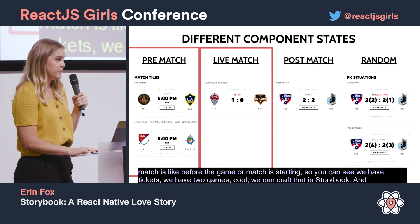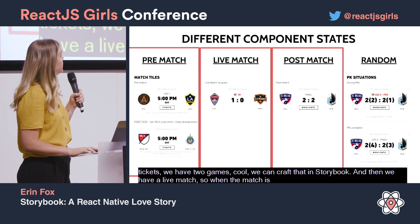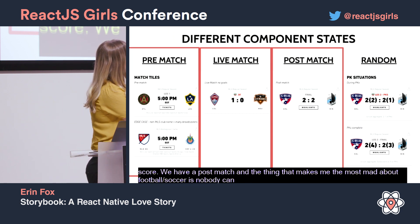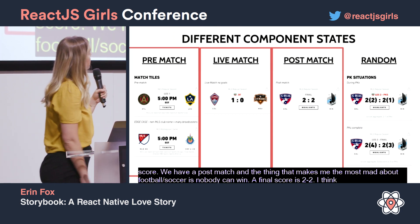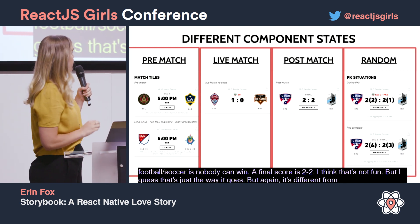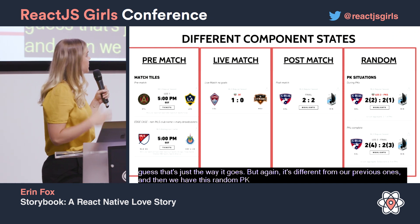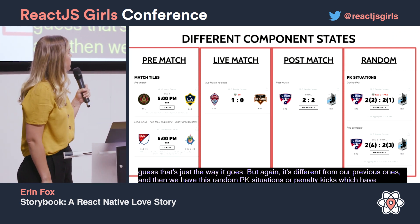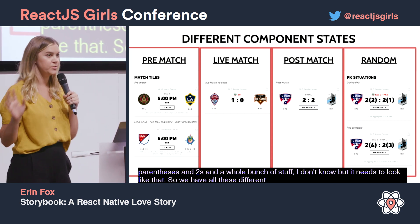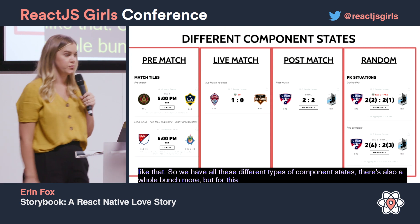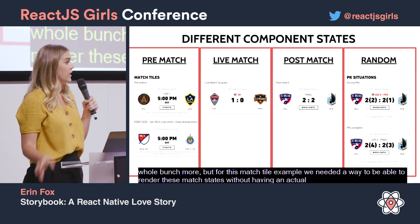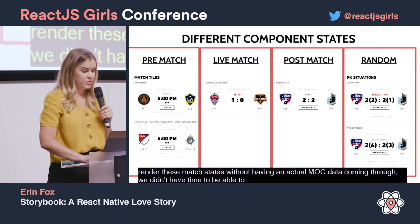Then we have a live match state when the match is happening — we've got time and score. We have a post-match state too. And then there are these penalty kick situations with parentheses and leg twos and a whole bunch of stuff. So we have all these different component states, and for this match tile example we needed a way to render these match states without actual mock data coming through. We didn't have time to create a mock match, so Storybook was the best way to represent these.